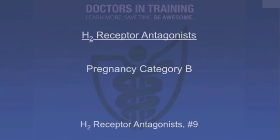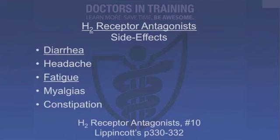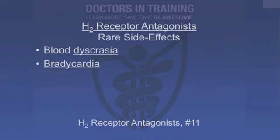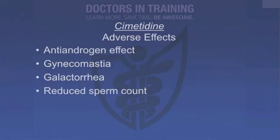Adverse effects: H2 blockers are very safe drugs and often over-the-counter. They do cross the blood-brain barrier and the placenta and are excreted in milk, but are category B — so generally considered safe in pregnancy. Less than three percent of the population will get diarrhea, headache, fatigue, myalgias, or constipation. Very rarely but importantly, you can get blood dyscrasias and even some bradycardia. A great test question is about cimetidine: unlike the other H2 blockers, it has an anti-androgen effect, which can lead to gynecomastia in men, sometimes galactorrhea, and reduced sperm count. Remember that cimetidine is the only one with this anti-androgen effect. Drug interaction: cimetidine primarily interferes with cytochrome P450, so be aware of that with other drugs.